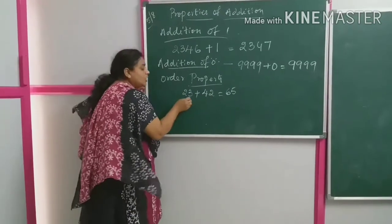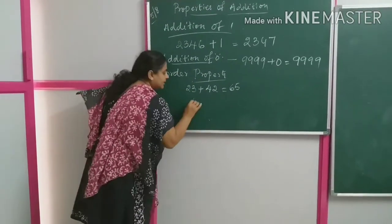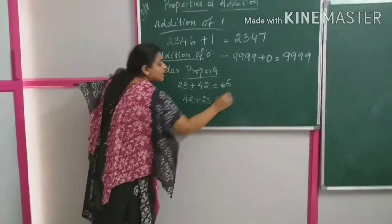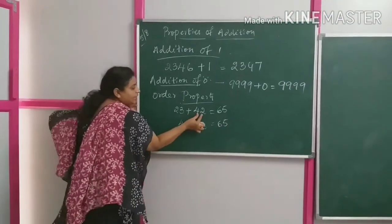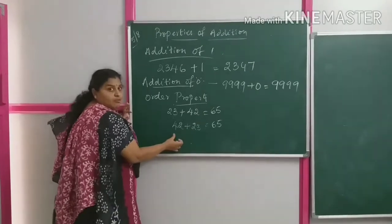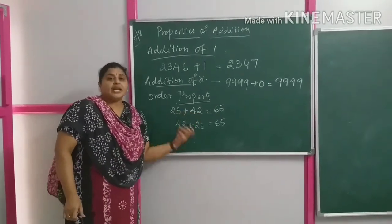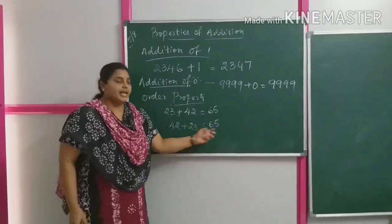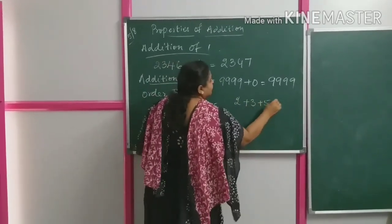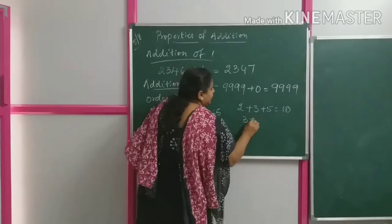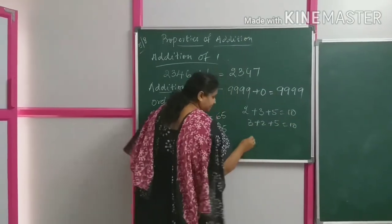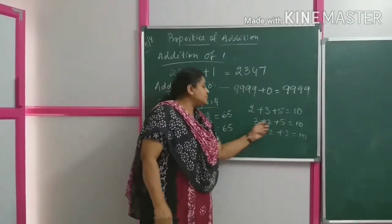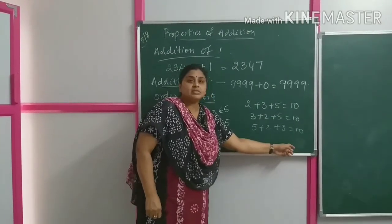I am adding 42 to 23. Now if I change the order — 42 plus 23 also gives the same answer, 65. Even if you change the order of the numbers, the answer remains the same. For instance, 2 plus 3 plus 5 is 10. And 3 plus 2 plus 5 is also 10, and 5 plus 2 plus 3 is also 10. I am changing the order of the numbers, but still the answer remains the same. That is the order property.